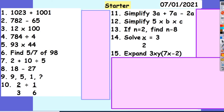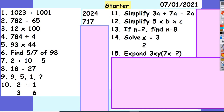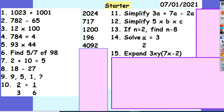Hopefully you paused the video there and had a go at some of these questions. The answers I was looking for: Question 1 — a column addition would give you 2,024. A column subtraction would give you 717. 12 times 100 is 1,200. 784 divided by 4 is 196. If you'd done a grid multiplication, you'd have got 4,092.